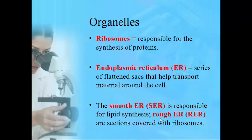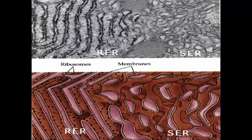They are called smooth and rough because the rough ER looks rough — it's as if you took the smooth ER and sprinkled salt or pepper on it. Down here is an illustration, and up here is a real slide. The smooth ER side looks much smoother and cleaner, while the rough ER side has little black dots — those are ribosomes. That's what makes the rough ER different: ribosomes on rough ER, none on smooth ER.